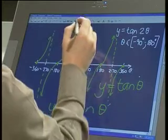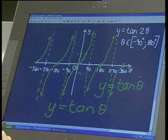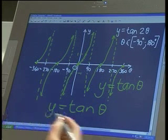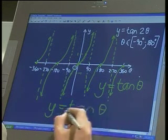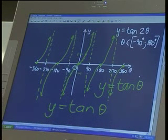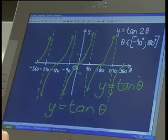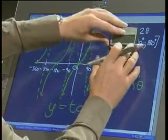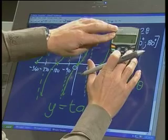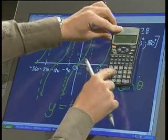Let's have a look. If I now try and draw the graph of y equals 2 tan theta on the same set of axes, we're going to try and draw the graph of y equals 2 tan theta. Not tan 2 theta, but y equals 2 tan theta.